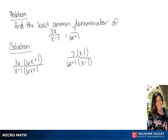And if we multiply that out, we are going to get our least common denominator of 6x squared minus 5x minus 1.